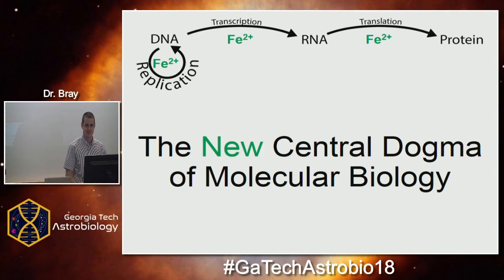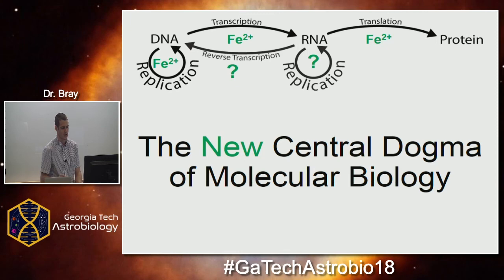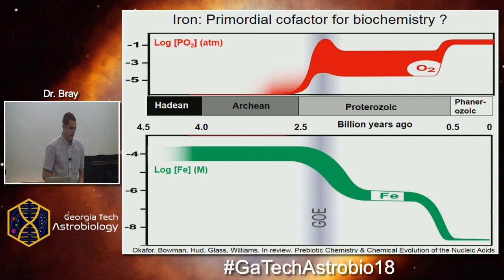We've basically been able to go through each step of the central dogma and replace the divalent cation from magnesium to iron. We can think about a new central dogma, at least with respect to the cation. We can also consider other reactions sometimes included in the central dogma — RNA replication and reverse transcription. We haven't tested these yet, but it's likely iron can facilitate them given that both processes are polymerase-dependent, like DNA replication.